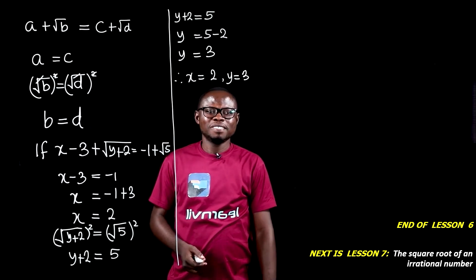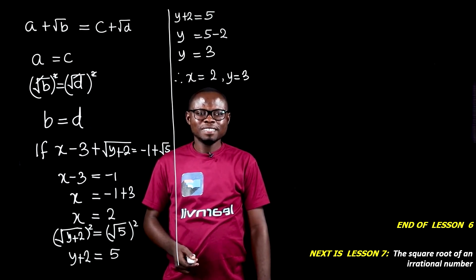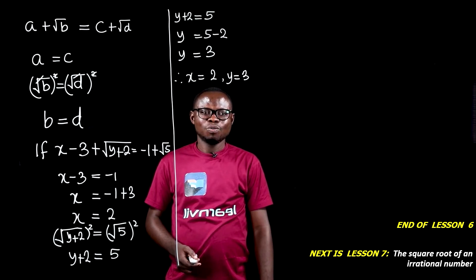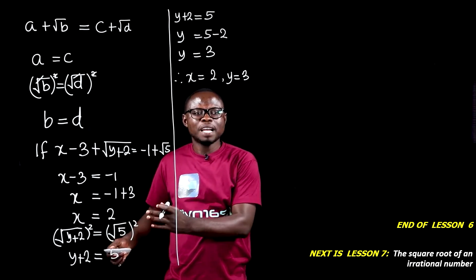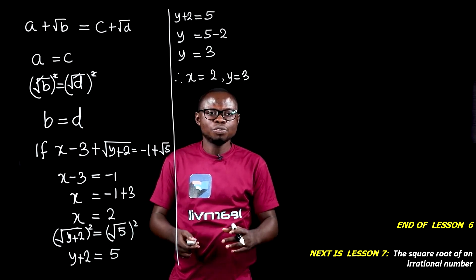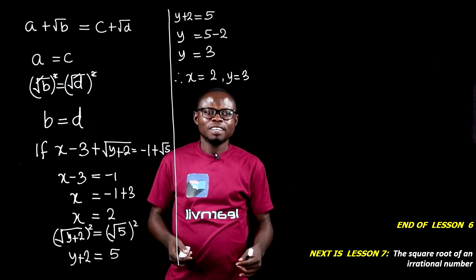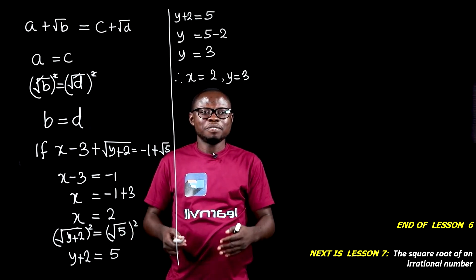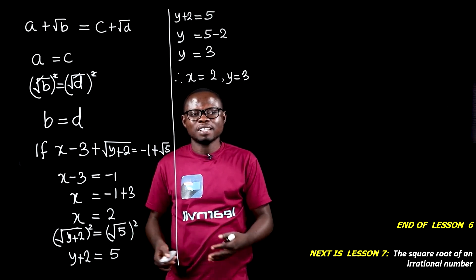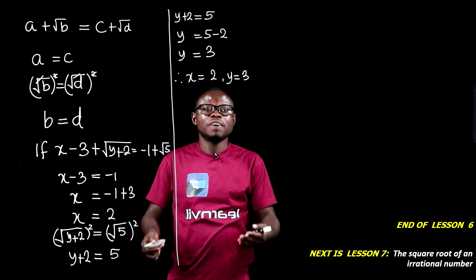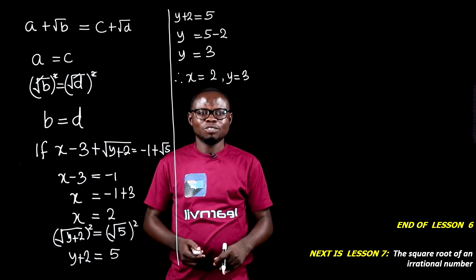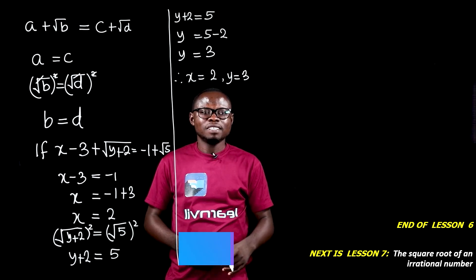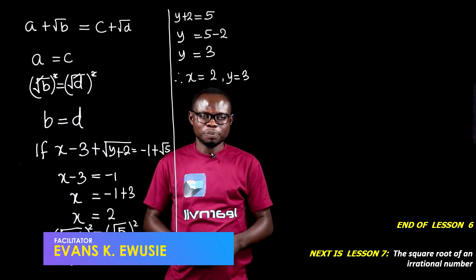This brings us to the end of this lesson. We have learned that when two expressions involving surds are equated, the rational part of the left-hand side is always equal to the rational part of the right-hand side, and the irrational part of the right-hand side is also equal to the irrational part of the left-hand side. When we form these equations, we can find the value of unknown variables. In our next lesson, we'll be looking at finding the square root of an irrational expression. See you in the next lesson. Thank you.